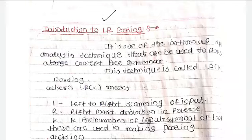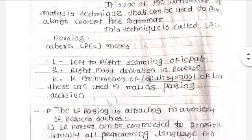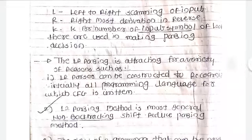Now, what is LR parsing and what are the concepts of the LRK technique? It is one of the most bottom-up syntax analysis techniques, which can be used to parse a large context-free grammar. This technique is also called LRK parsing. Here, L stands for scanning the input from left to right, R stands for right-mode derivation in reverse order, and K means the number of input symbols to be scanned by the look-ahead pointer for the parsing process.